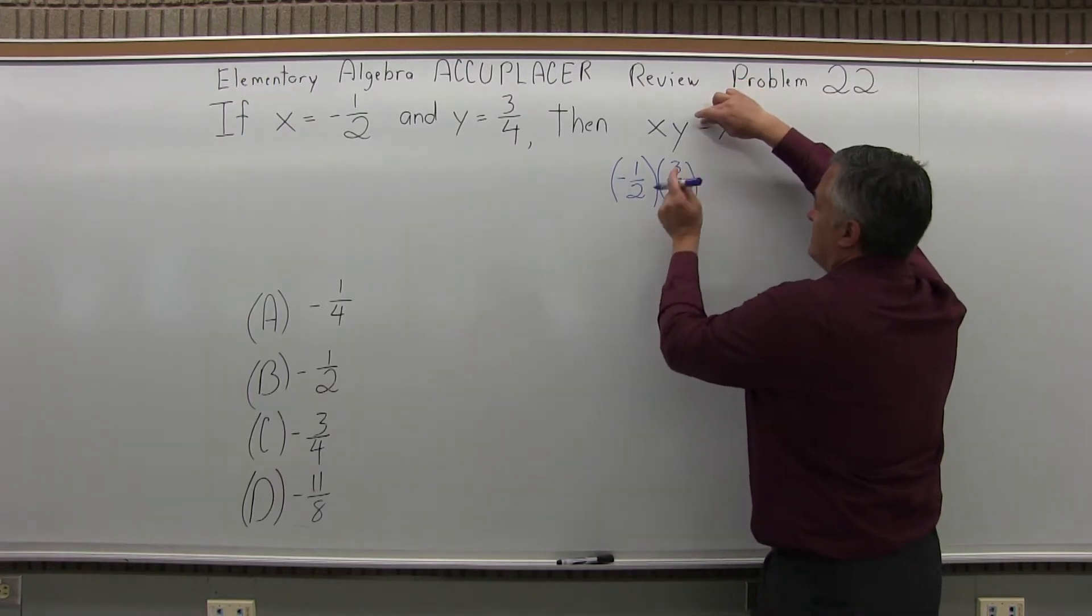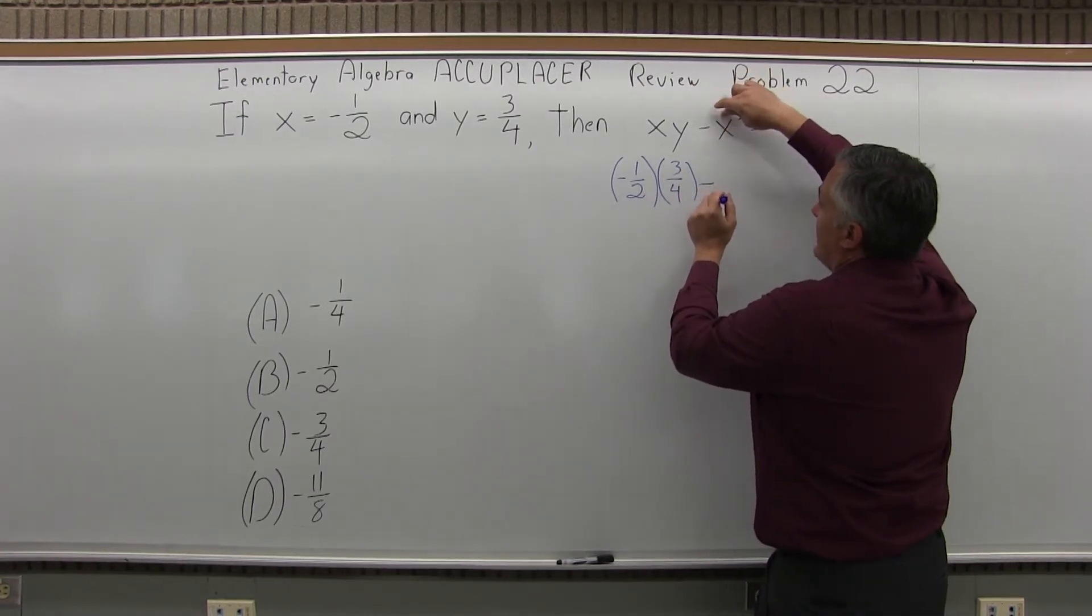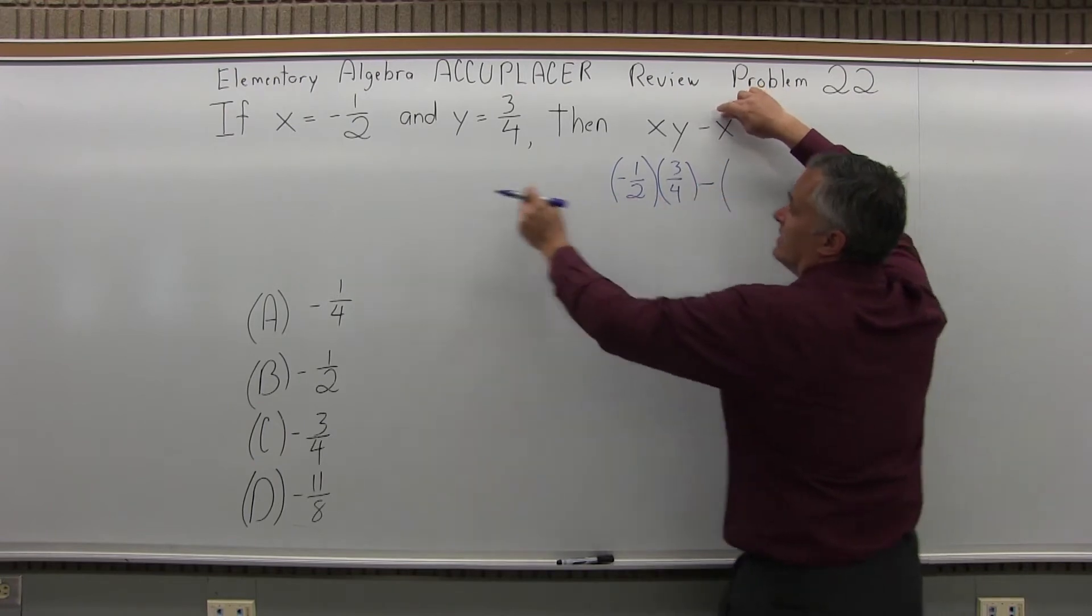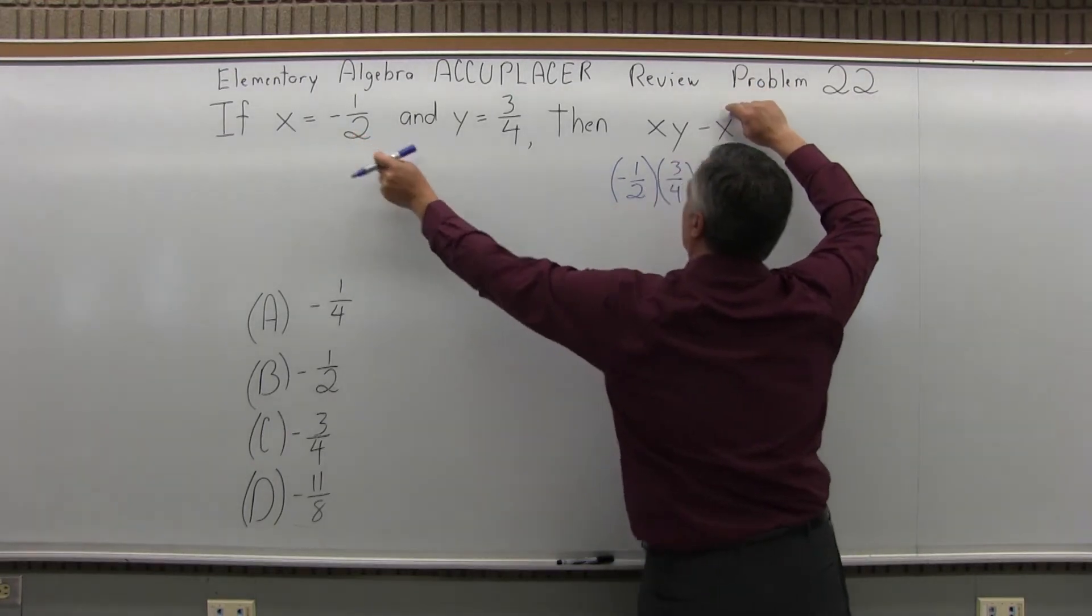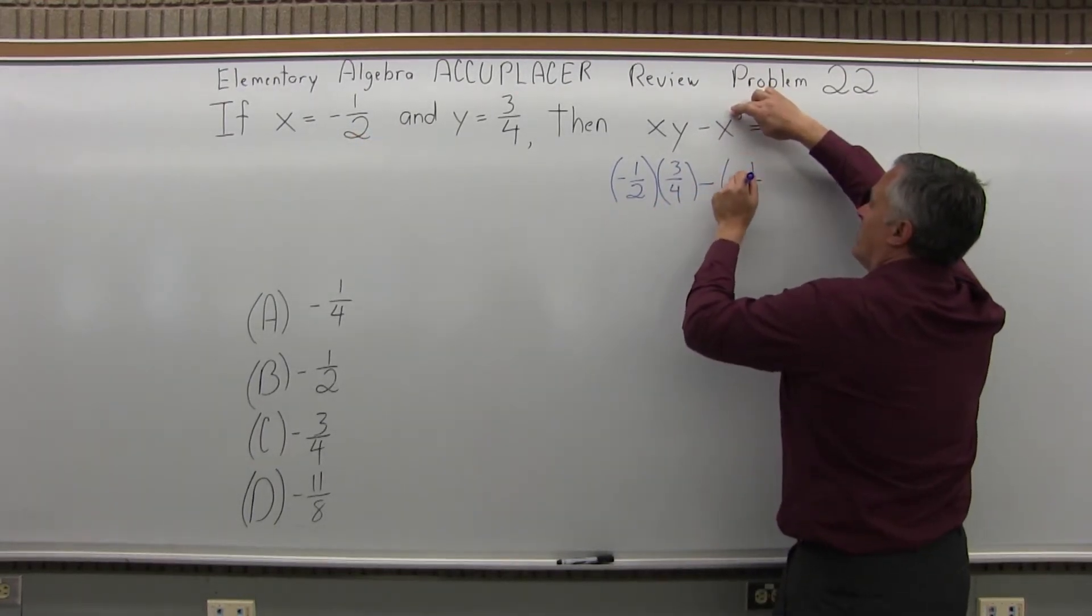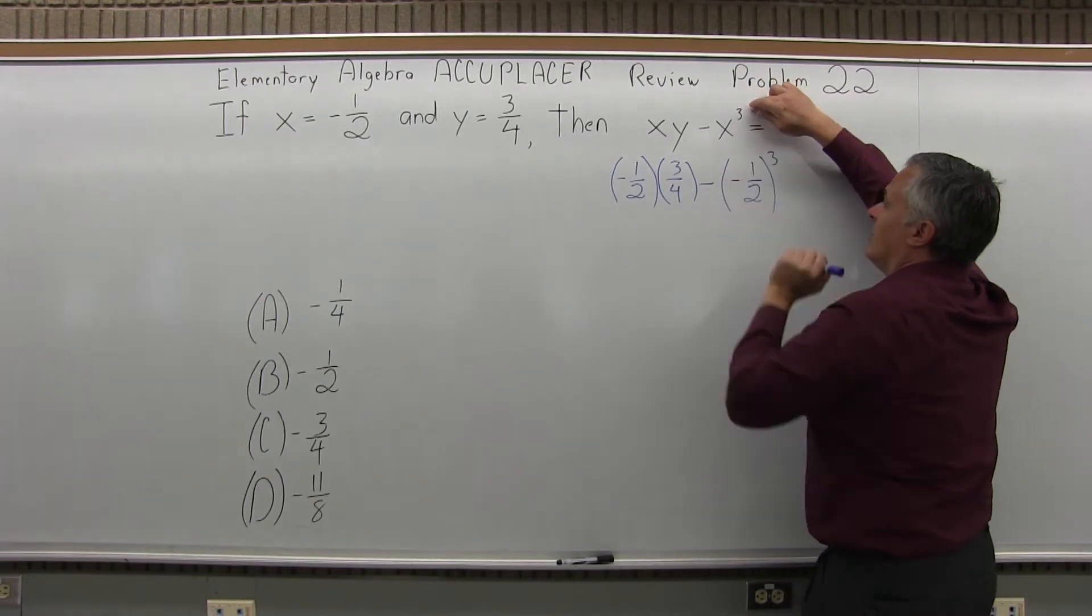Then we have minus, then x to the third. So again x is negative one-half, so I'm going to have negative one-half to the third power.